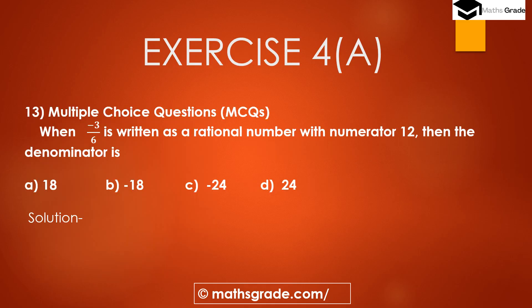Question number 13 — multiple choice question. When -3/6 is written as a rational number with numerator 12, what will the denominator be? Here, the numerator is -3 and the denominator is 6. We need to find the rational number with numerator 12, and we have to find the corresponding denominator.